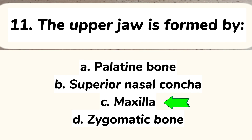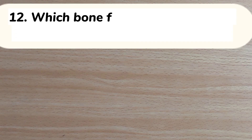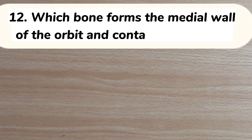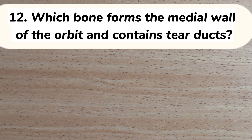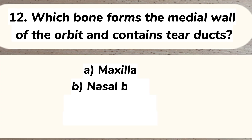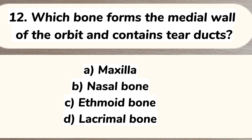Number 12. Which bone forms the medial wall of the orbit and contains tear ducts? A. Maxilla, B. Nasal bone, C. Ethmoid bone, D. Lacrimal bone. Answer: D. Lacrimal bone.